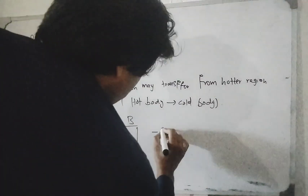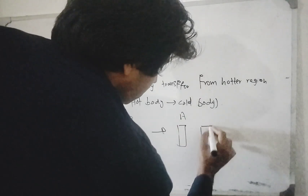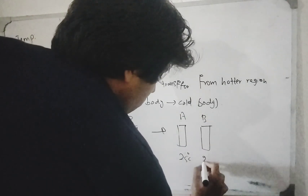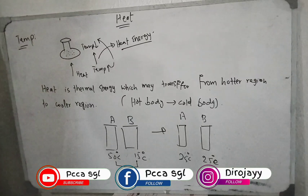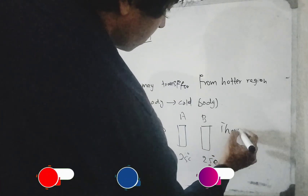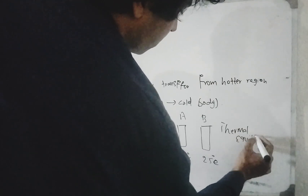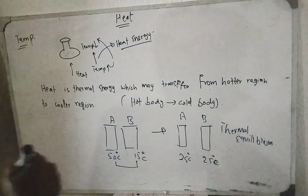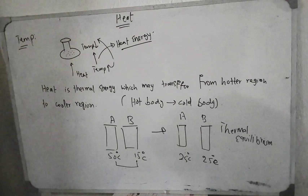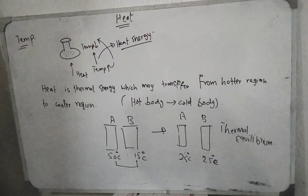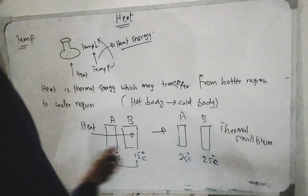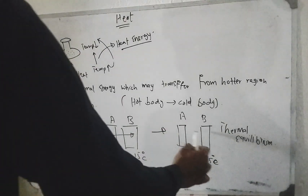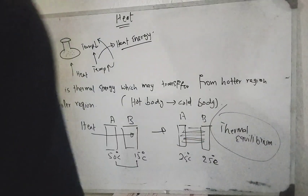When body A and body B both reach a temperature of 25 degrees centigrade, we call this thermal equilibrium. Delta represents the energy transfer from the hot body to the cooler body. Heat exchange stops when the two bodies are in equilibrium.